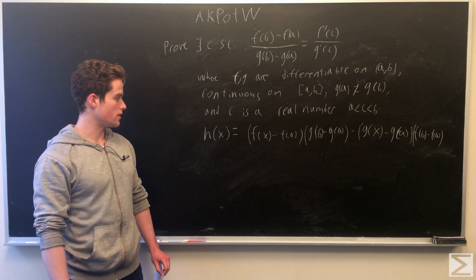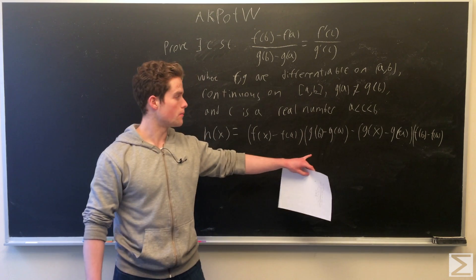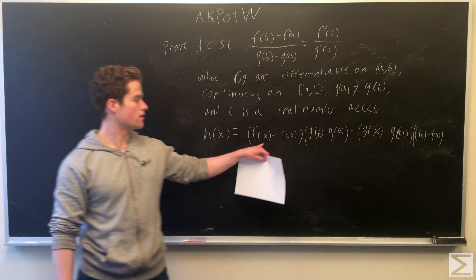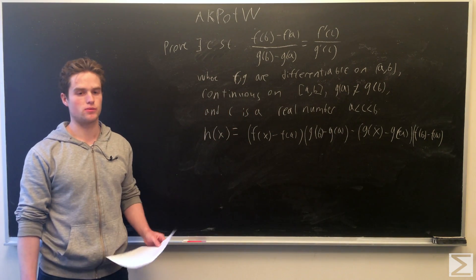Note h of b, this becomes f of b minus f of a times g of b minus g of a minus the same thing over here, so it's 0 at b. At a, these front terms both become 0, and so h of a equals h of b, which equals 0.